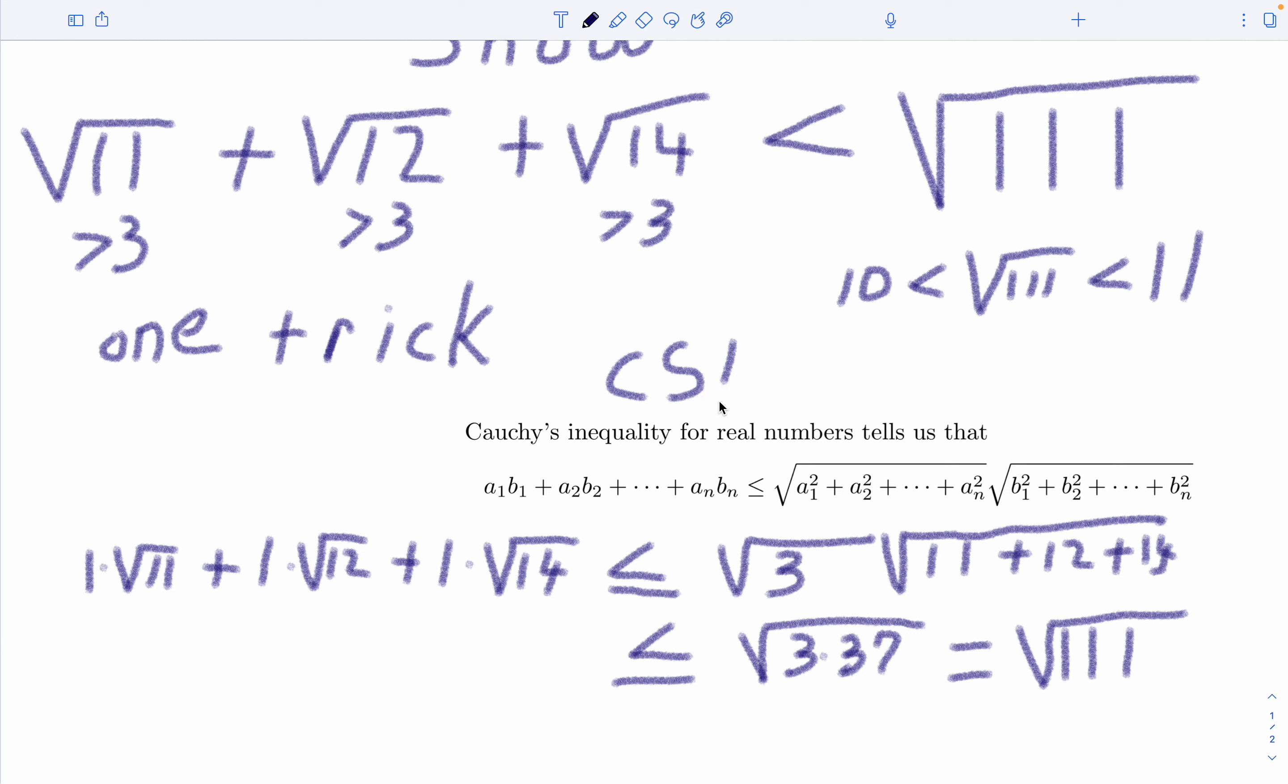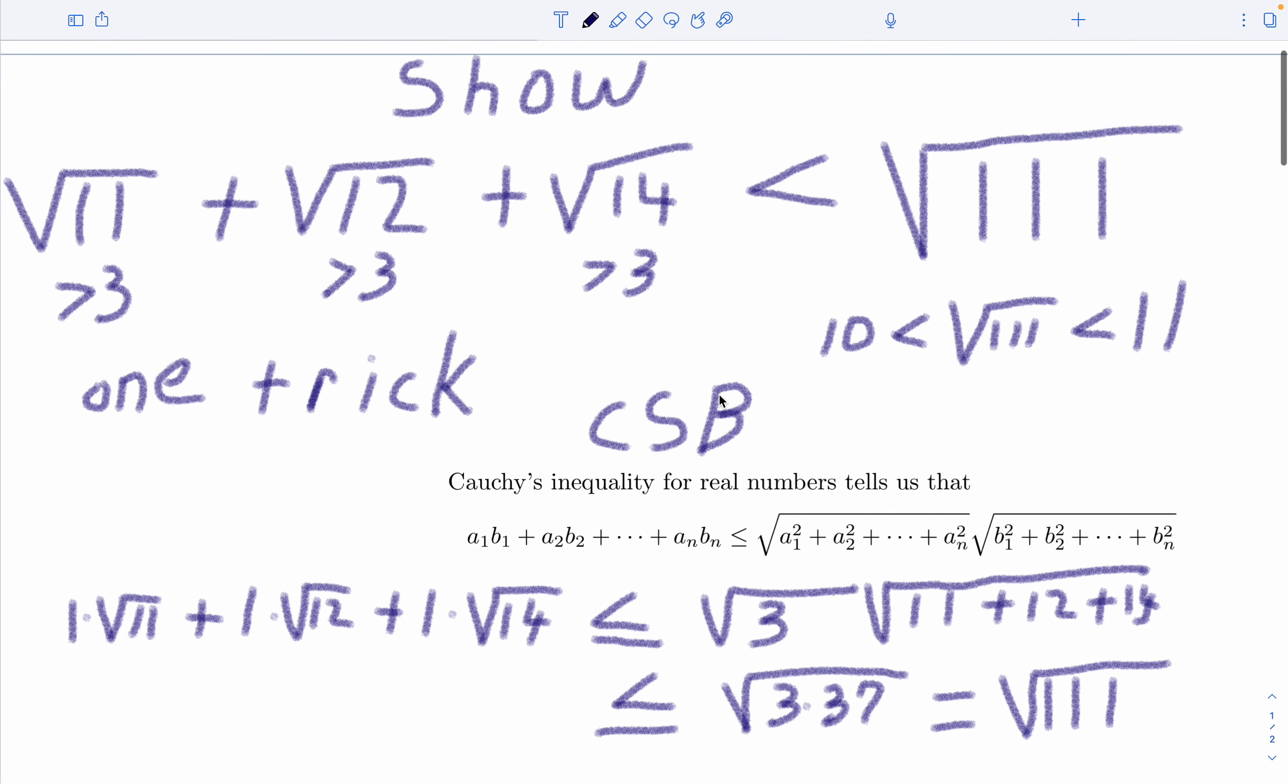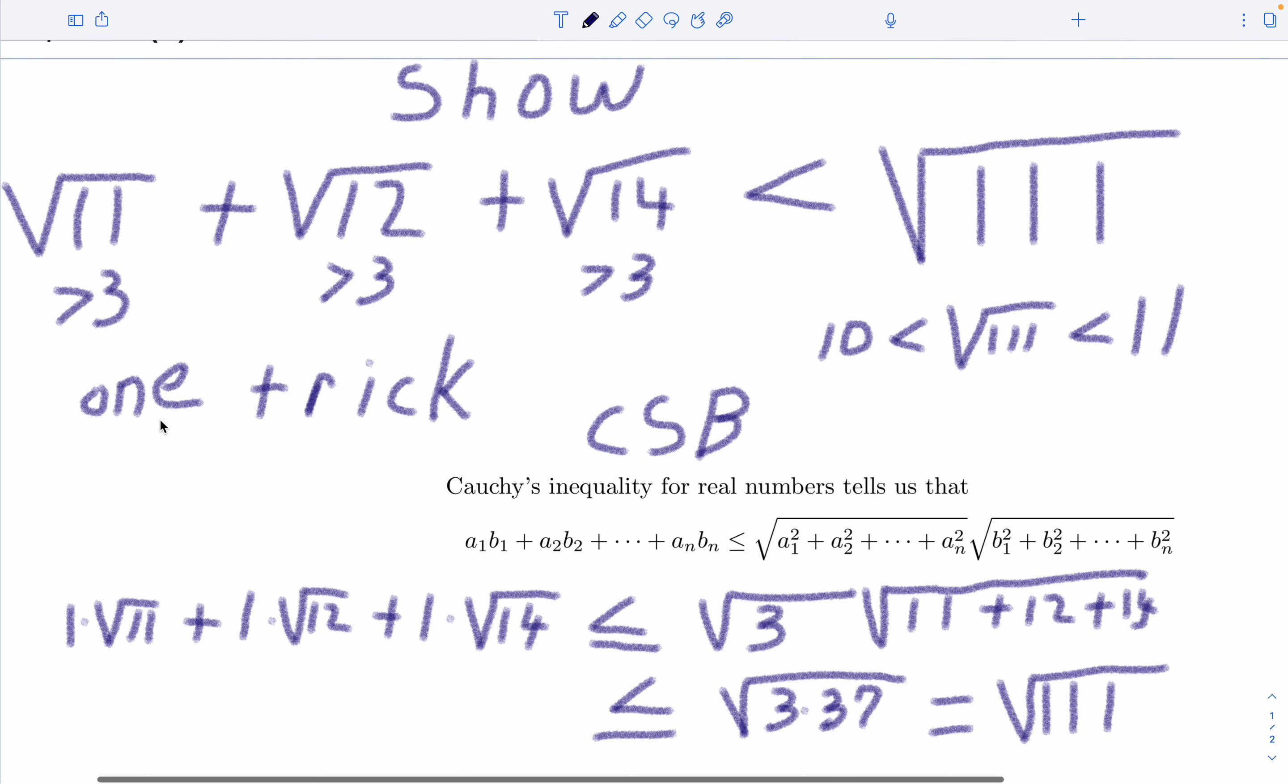But Cauchy-Schwarz inequality, or the CSB sometimes, there's another guy associated with this thing. But again, one of the more prevalent inequalities in all of mathematics. And I hope this helps again, they call this the one trick.